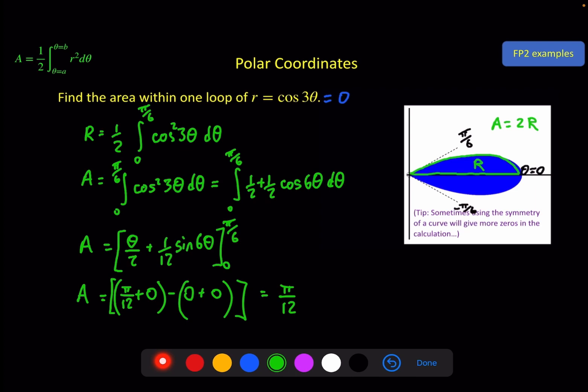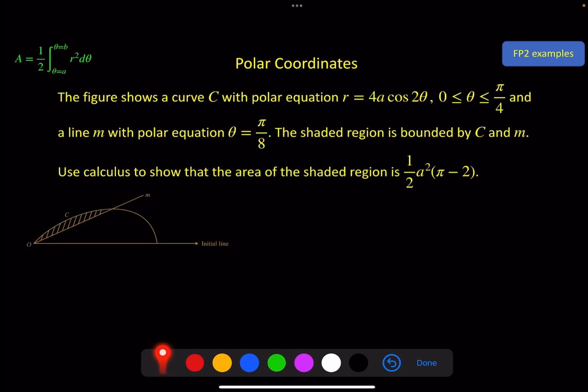Second and final example, the figure shows a curve C with polar equation r = 4a cos 2θ. That's this one here. Going from θ equals zero, the initial line, up to θ equals π/4, which is about here. And that's where the curve comes back down and has a radius zero again. And the line m here with polar equation θ = π/8. The shaded region is bounded by C and m.